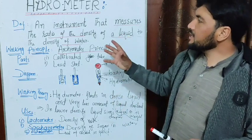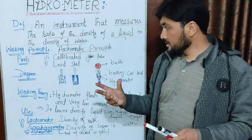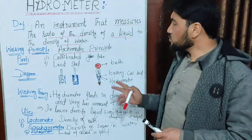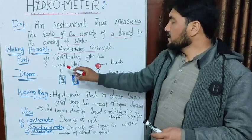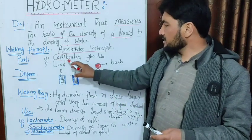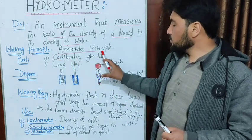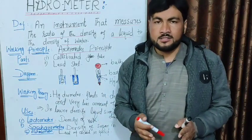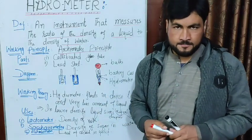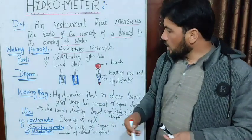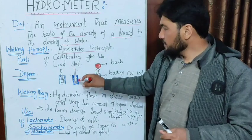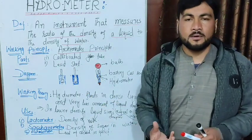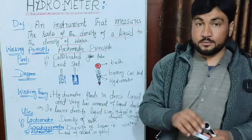First, we have the parts. We have two parts of the hydrometer. One is a calibrated glass tube, which has calibrated density markings. Then, we also have lead shot at the bottom.